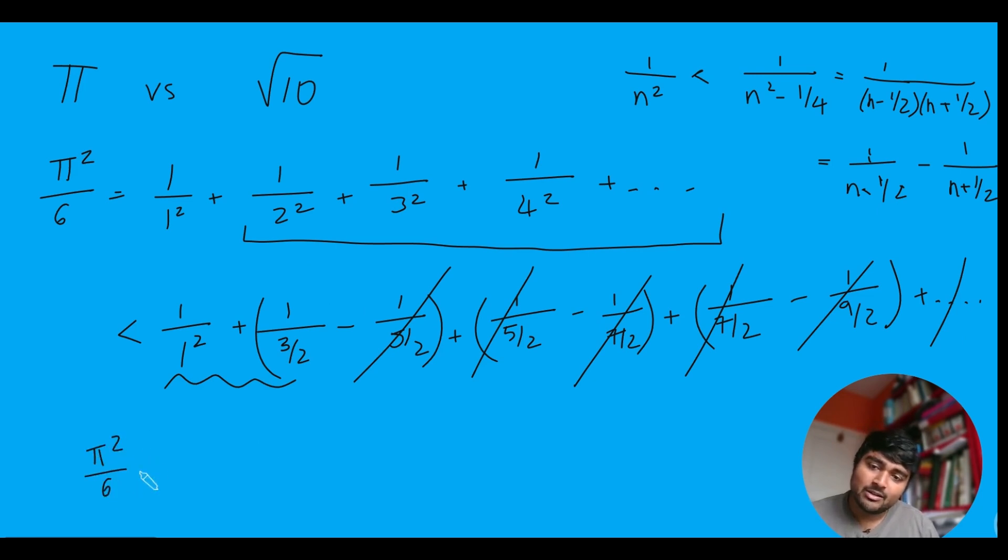So we get that pi squared over 6 is less than 1 over 1 squared, which is just 1, plus 1 over 3 over 2, which is 2 thirds. And that all together is 5 thirds. Multiplying both sides by 6, we get pi squared is less than 10. And so therefore pi is less than the square root of 10.